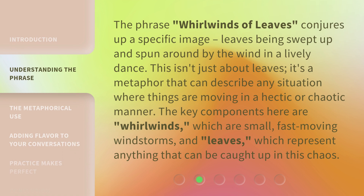The phrase 'Whirlwinds of Leaves' conjures up a specific image: leaves being swept up and spun around by the wind in a lively dance. This isn't just about leaves — it's a metaphor that can describe any situation where things are moving in a hectic or chaotic manner. The key components are whirlwinds, which are small fast-moving windstorms, and leaves, which represent anything caught up in this chaos.